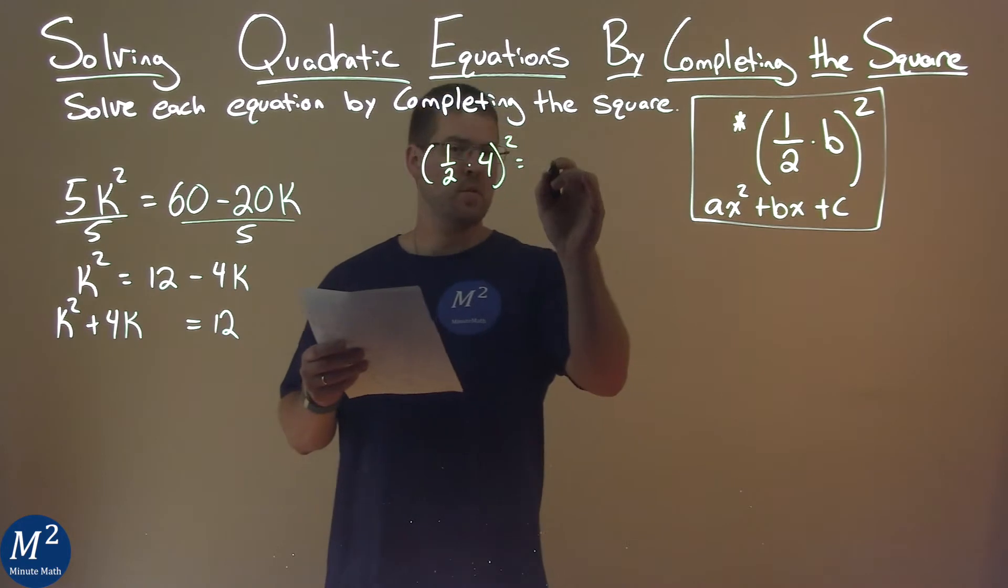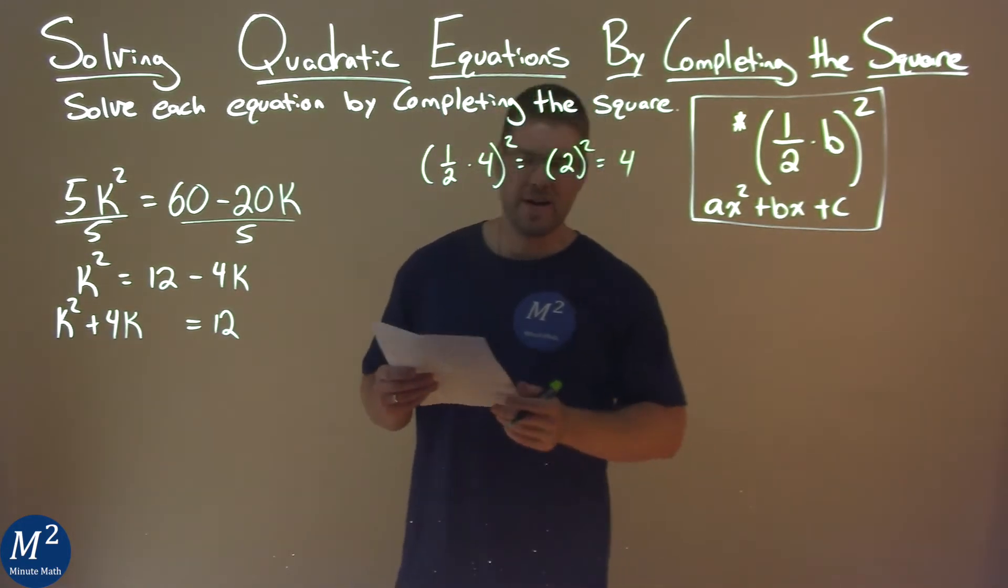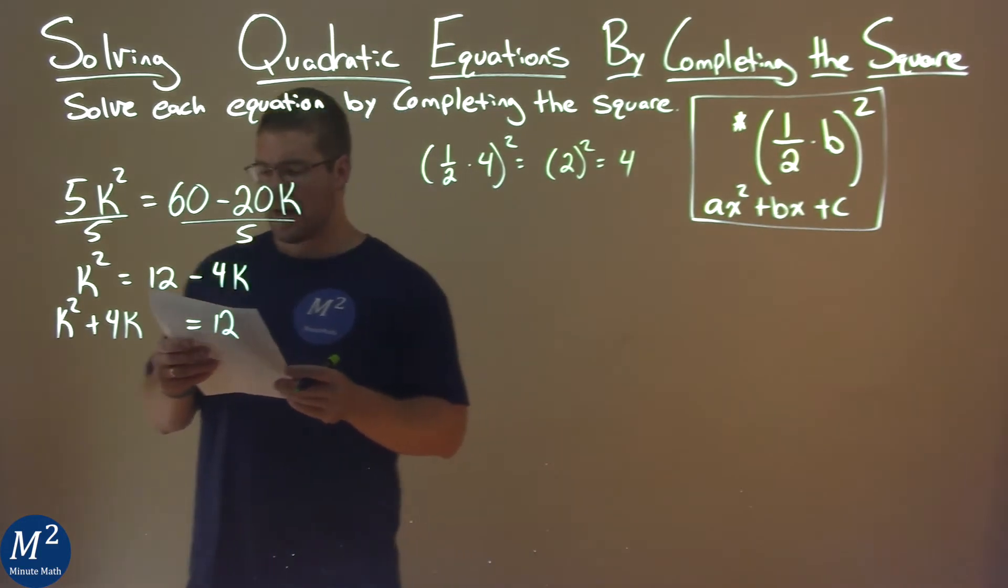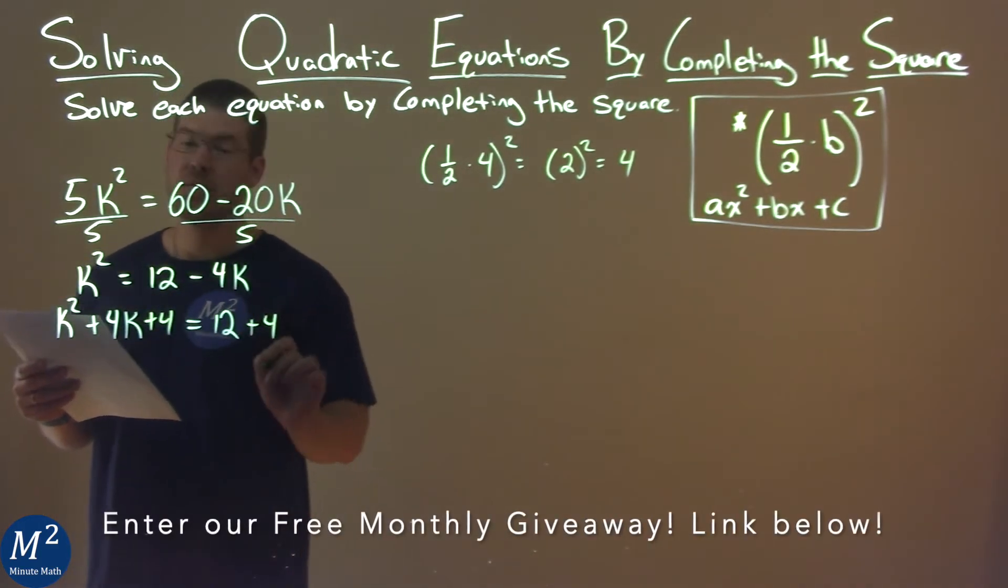1 half times 4 is 2. You square that, and we get 4 again. So I'm now going to actually add 4 to both sides of the equation.